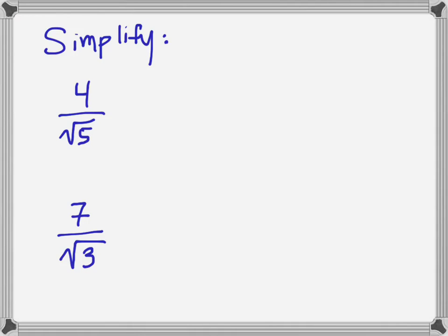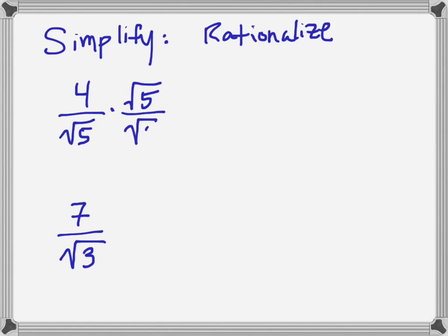What do we do if we have a square root in the denominator of a fraction? The steps we're going to take are called rationalizing. What we're trying to do is make the denominator a rational number — we don't want it to be a square root anymore. If I multiply by square root of 5 over square root of 5, that equals 1. By the identity property of multiplication, I'm not changing the value of my original fraction.